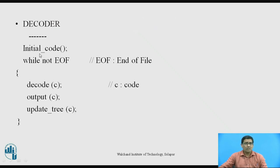For the decoder: initialization of the code. After that we use a while loop with condition 'while not EOF' (end of file). After that we decode the code which was transmitted with the help of encoding. We see the output of that code and again make necessary changes in the tree, updating the tree with the help of that code.